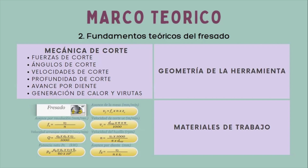Y como último subtema están los materiales de trabajo. En la industria aeroespacial implica el mecanizado de materiales que poseen propiedades específicas que garantizan la resistencia, durabilidad y rendimiento de los componentes aeroespaciales. Las propiedades de materiales más comúnmente utilizadas en esta industria son las aleaciones de aluminio, aleaciones de titanio, superaleaciones a base de níquel, fibra de carbono y materiales compuestos.